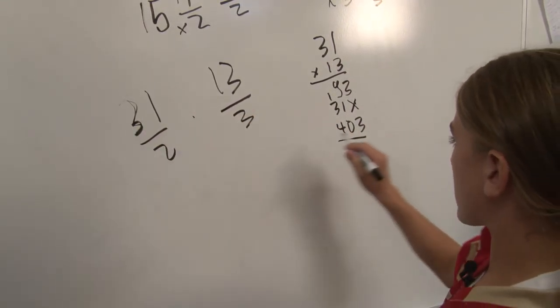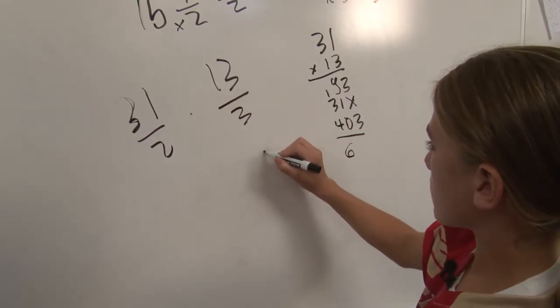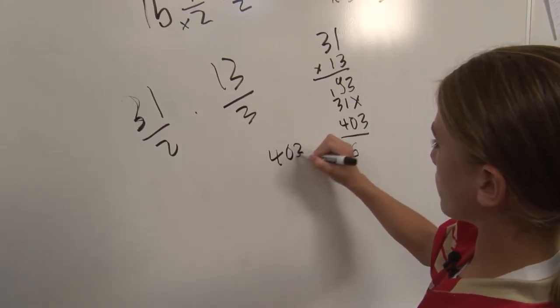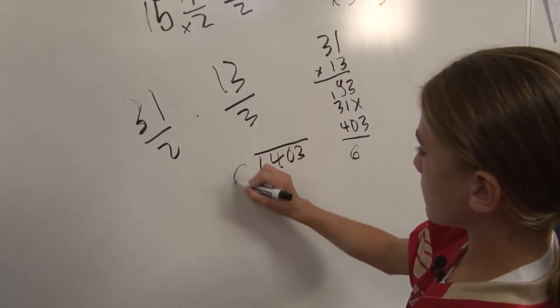But then to make it a mixed number, you would have to divide and get the whole number and the fraction. Okay, so here's where estimating is going to take part.